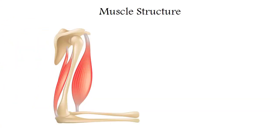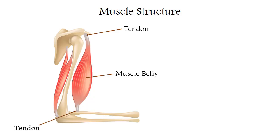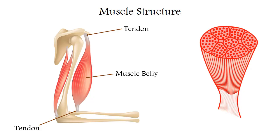The muscle starts from the bone usually with a tendon. Next comes the fleshy part — this is the belly or the body of the muscle, which is exactly the part that shortens during muscle contraction. Then usually comes again the tendon with which the muscle is attached to the other bone. For massage therapists it is very useful to know not only muscle attachment sites but also the places where the muscle belly passes into the tendon, because working with the muscle belly and tendons requires different massage techniques.